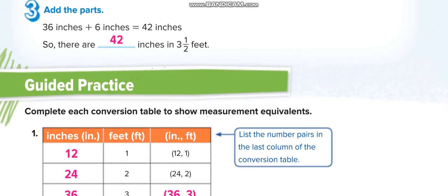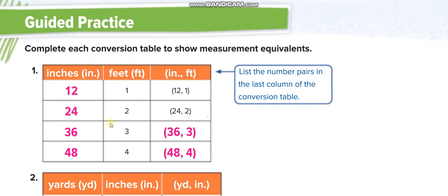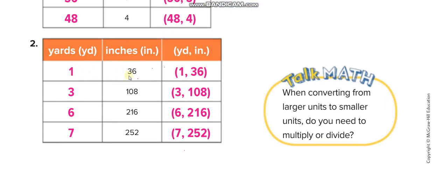Here's the pattern for feet to inches: 1 foot = 12 inches, 2 feet = 24, 3 feet = 36, 4 feet = 48 — multiplying by 12 each time. For the reverse, 36 inches equals how many yards? Since 1 yard equals 36 inches, you divide by 36: 108 inches = 3 yards, 216 inches = 6 yards, 252 inches = 7 yards.